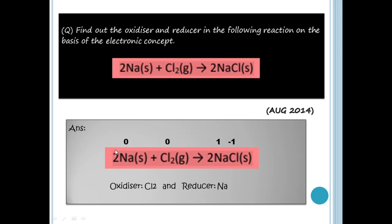Sodium is in the elemental state — oxidation number is 0. Cl2 is also in the free state — oxidation number is 0. In NaCl: Na is an alkali metal so Na is +1, and Cl is -1. Setting up: 1 + x = 0, so Cl is -1.